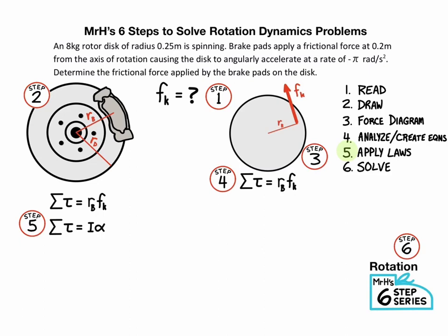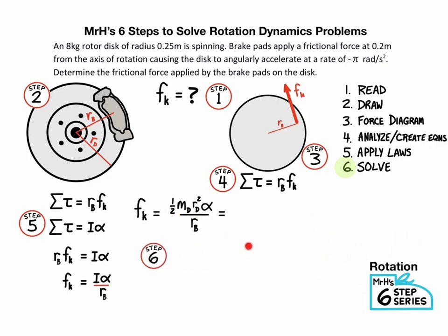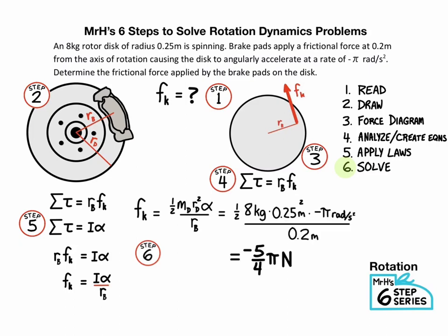Step six is to solve for the unknown. The unknown was friction. There it is. Again, we're going to substitute since we got two net torque equations. We'll rewrite that as Rb times Fk equals I alpha. And we're solving for Fk, so divide by Rb. And I, for a disk, is one-half Mr squared. So we're going to substitute that letter I with one-half Mr squared. And then we're going to substitute and solve. We get about negative five-fourths π Newtons.